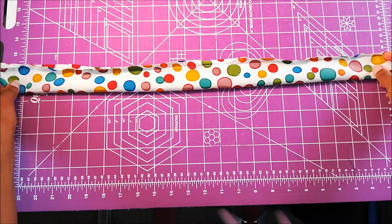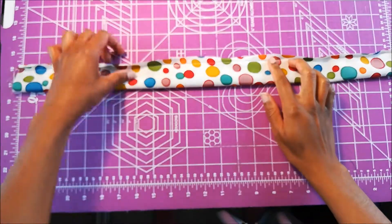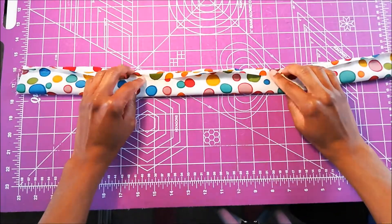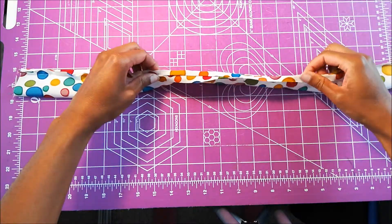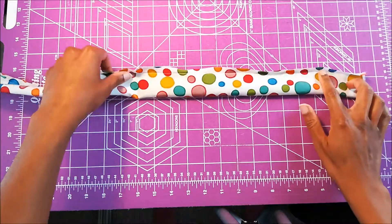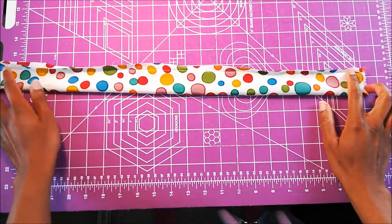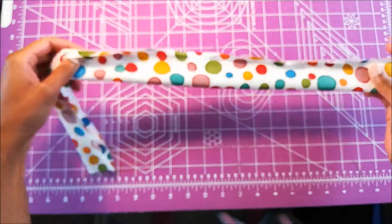Alright, so I've gone ahead and stitched this seam closed. And I have pressed it open. Just a light pressing. So now what I'm going to do is I'm going to remove my basting stitches. And I'm going to flip this tube right side out.